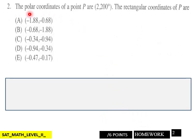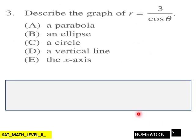Page two: the polar coordinates of P are 2, 200 degrees. The rectangular coordinates of P are, then here's your choices here for those, six points for page two. Page three: describe the graph of r equals three over cosine theta.